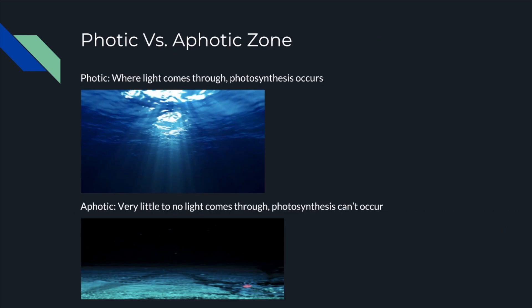In the last slide, I talked about the photic and aphotic zones. What do these mean? The photic zone is where light comes through and photosynthesis can occur. The aphotic zone is where very little to no light comes through and photosynthesis can't occur. Below I have shown pictures of these areas, and I thought the aphotic zone looked very cool.